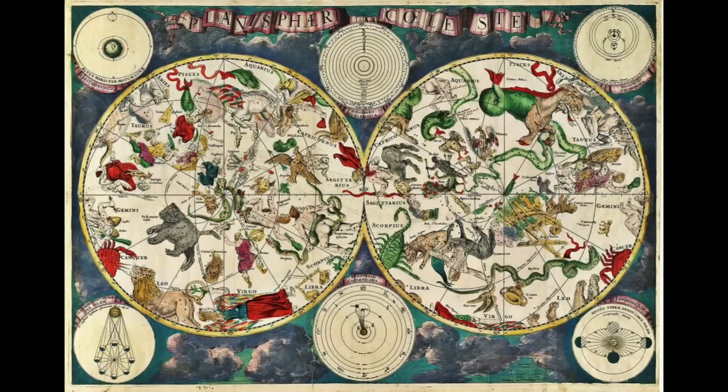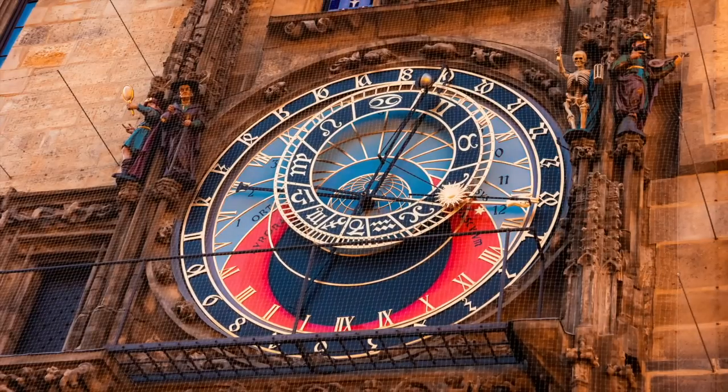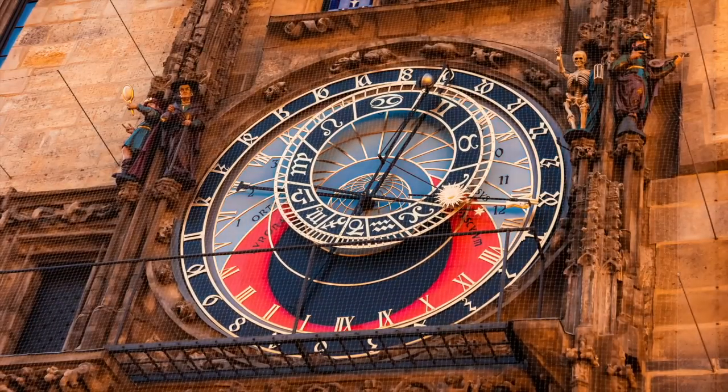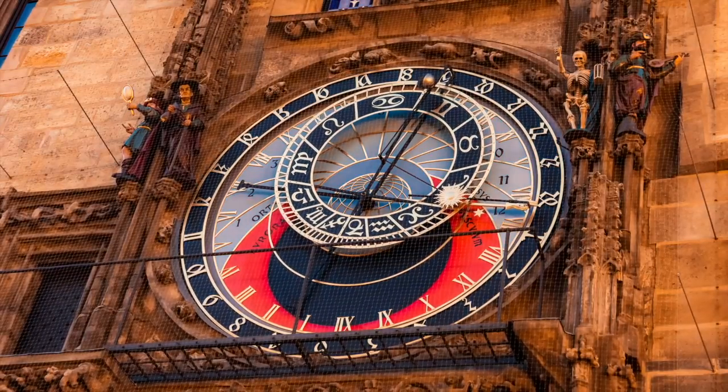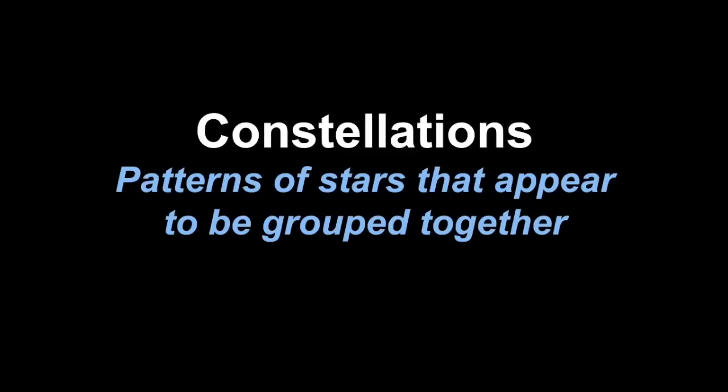The earliest origins date far back to prehistoric times and cultures around the world have adopted their own constellations. Remember, these patterns also change over time, but according to the International Astronomical Union, there are 88 designated constellations.